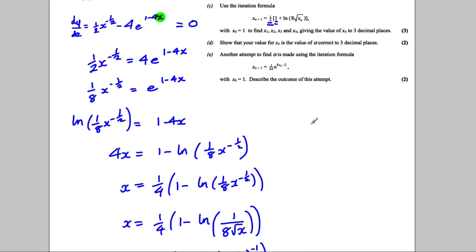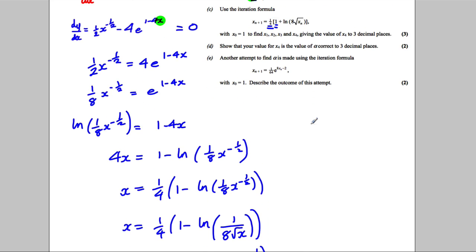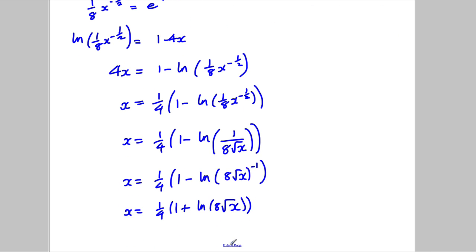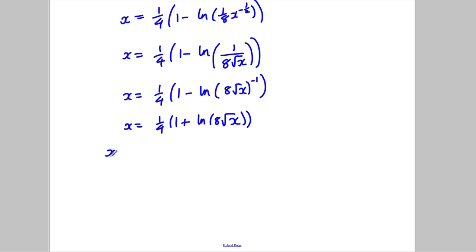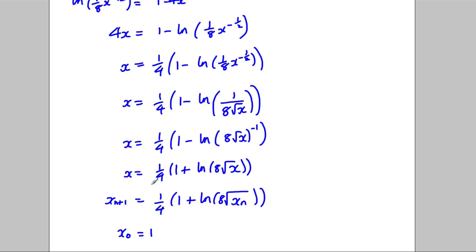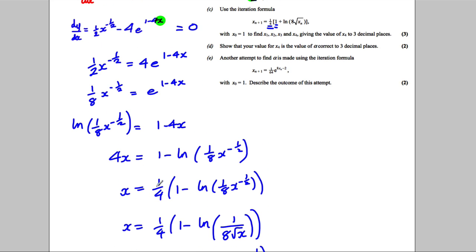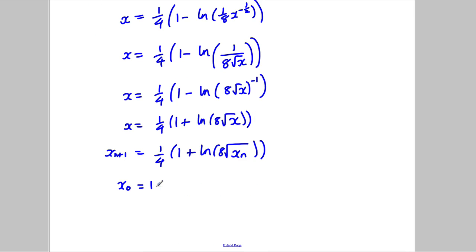For part C, we use this as an iterative formula with x0 equal to 1, finding values up to x4 to three decimal places. The iterative formula is x_{n+1} equals a quarter times 1 plus the natural logarithm of 8 times the square root of x_n, with x0 equal to 1.